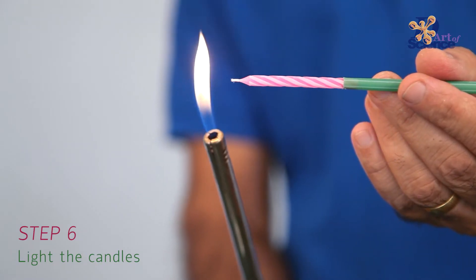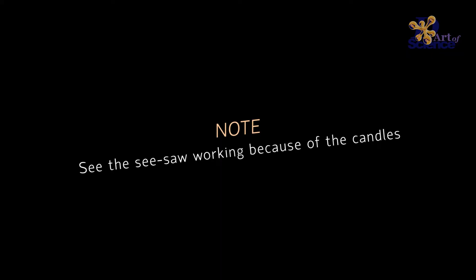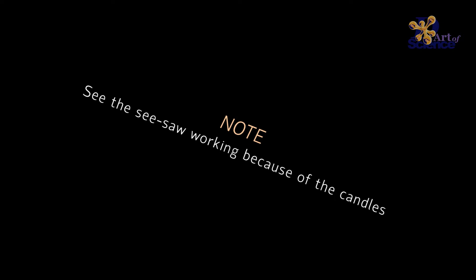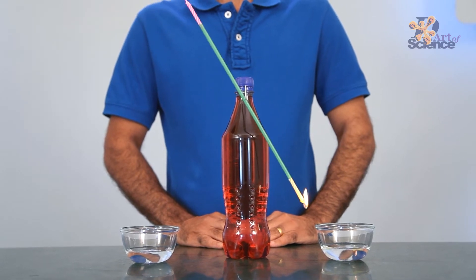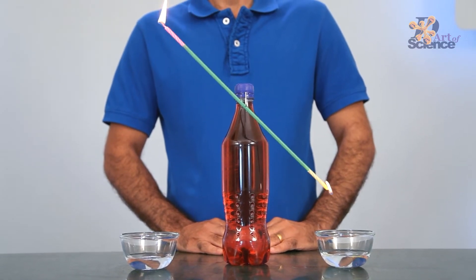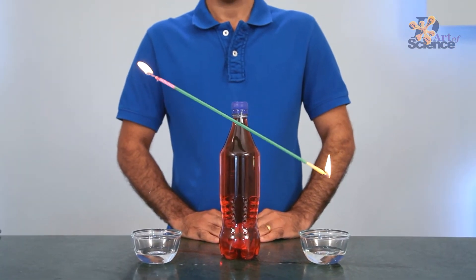Let's say we burn candle A first. The burning of this candle results in transformation of wax to gas. The wax that is lost due to burning and dripping down makes candle A shorter and therefore a little bit lighter than candle B. Candle B, the heavier one, goes down and candle A, the lighter one, goes up.